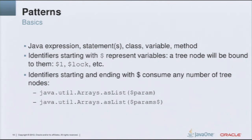If we start a variable name with a dollar and end it with a dollar, it will consume any number of AST trees. This language is also based on AST, so there are many places where a piece of code and an AST node mean the same thing. An identifier starting and ending with a dollar sign will consume any number of AST nodes. The difference between consuming one and many is shown in this example: the first pattern will match only invocations of Arrays.asList that take exactly one parameter. The other one will match any invocation of Arrays.asList regardless of the number of parameters — zero, one, or any other number.